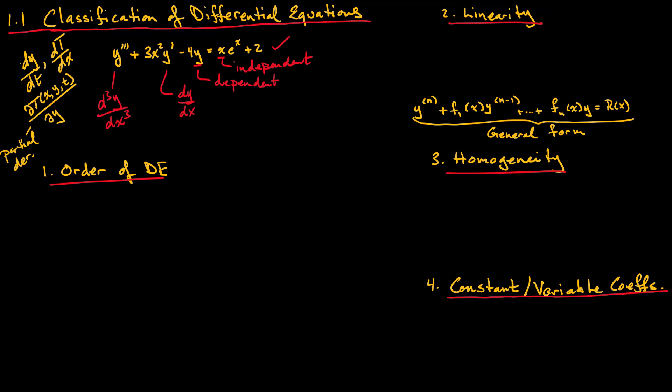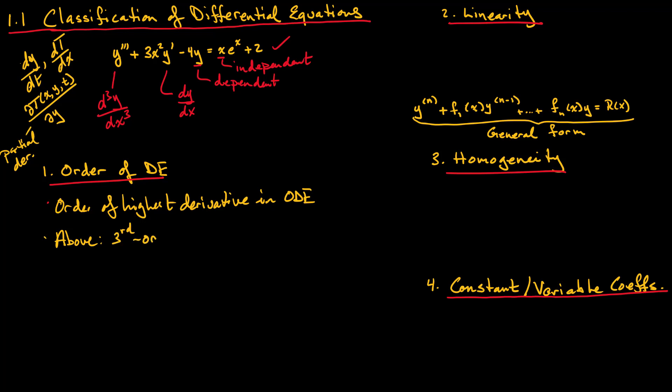The order of the equation is the order of the highest derivative present in the ODE. In the example above, it is a third-order ODE because we have the y-triple-prime term, which is the third derivative. There are no fourth-order or higher derivatives. There is a first derivative present, but since it is not the highest derivative, it does not dictate the order of the differential equation.